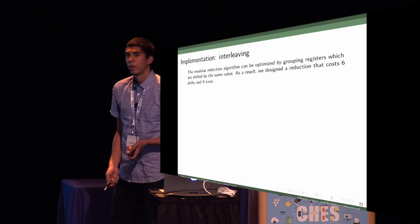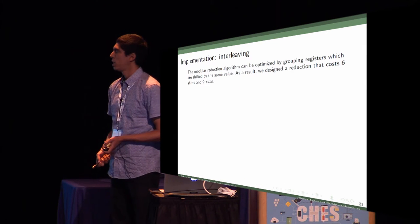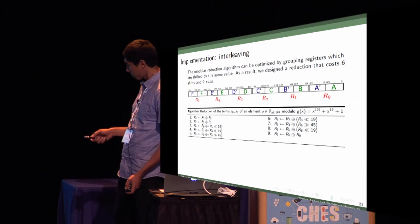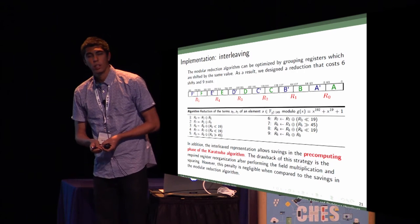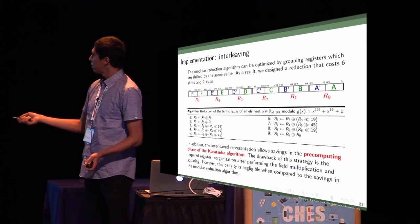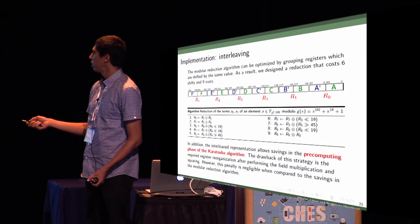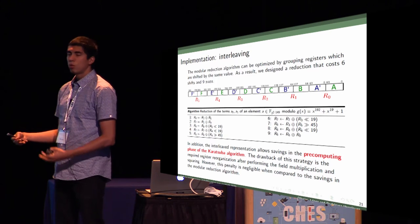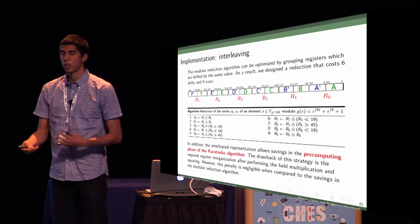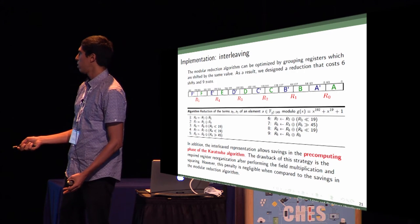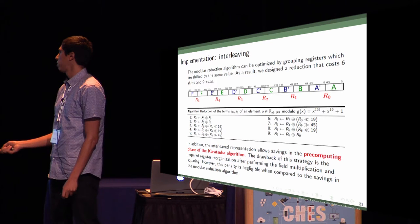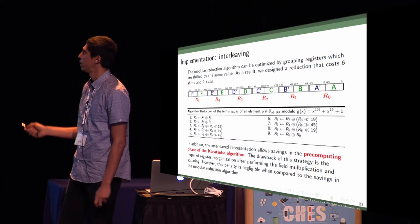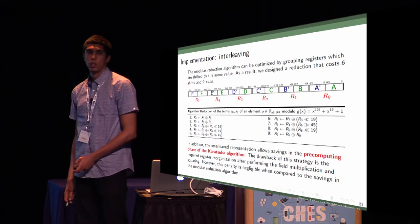We can reduce this by doing some optimization techniques, and reduce to only six shifts and nine XORs like this. This has a very good advantage because it allows saving in the precomputing phase of the Karatsuba algorithm. The problem is we need to reorganize the registers after multiplication and squaring, but this is very simple, just takes four clock cycles, compared to the saves in modular reduction, which now needs just six shifts and nine XORs to reduce the whole quadratic field element.